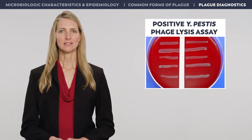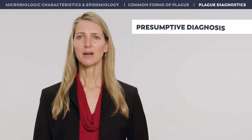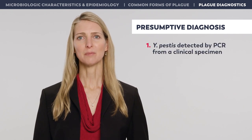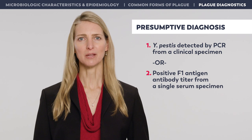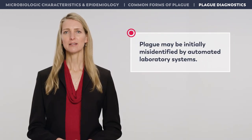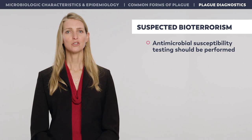Here you can see an image of phage lysis testing. The top band and three lowest bands are positive, indicating the presence of Y. pestis, while the second band from the top is the negative control. A presumptive laboratory diagnosis of plague can be made when Y. pestis is detected by PCR from a clinical specimen, or if there is a positive F1 antigen antibody titer from a single serum specimen. Note that plague may be initially misidentified by automated laboratory systems, particularly MALDI-TOF, resulting in a delay in accurate diagnosis and appropriate treatment. Antimicrobial resistance has never been observed in a naturally acquired Y. pestis infection in the United States; however, if a bioterrorism event is suspected, antimicrobial susceptibility testing should be performed, as strains in these events may be modified to confer antimicrobial resistance.